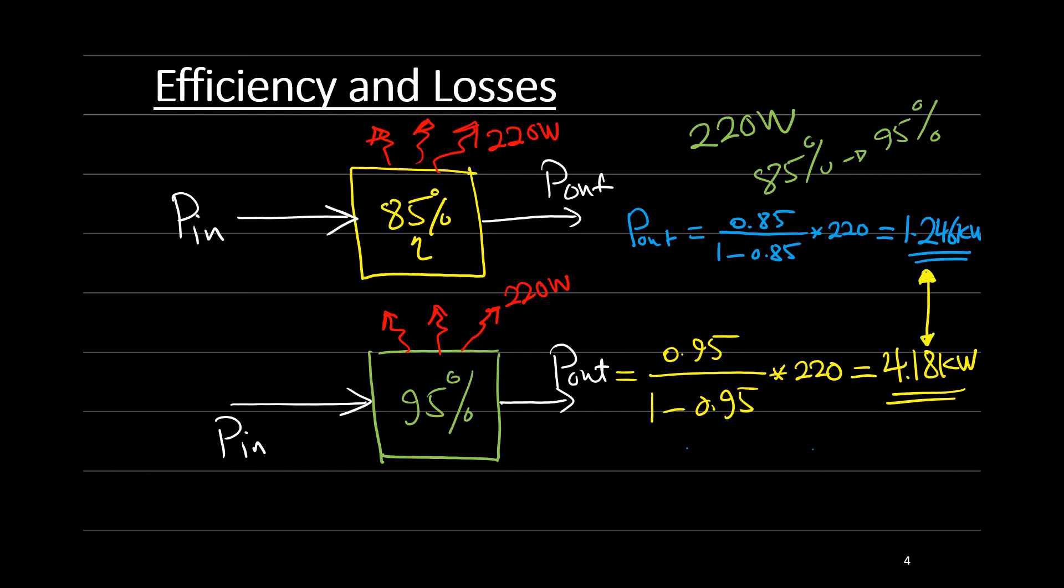We just increased 10% of efficiency. We managed to get almost three times output power from the converter. So using the same components and keeping the same power losses, we can increase the power capability from 1.246 kilowatt to 4.18 kilowatt, which is almost three times if we manage to increase the efficiency from 85% to 95%.